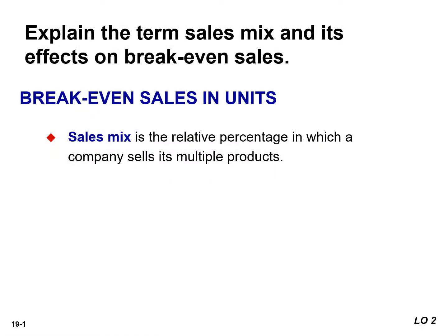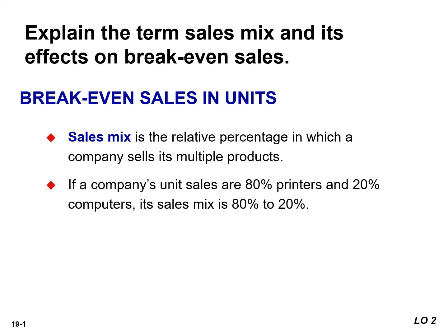Our discussion of CVP analysis has assumed that a company sells only one product. Most companies sell multiple products. When a company sells many products, it is important that management understand its sales mix. Sales mix is the relative percentage in which a company sells its multiple products. If a company's unit sales are 80% printers and 20% computers, its sales mix is 80% to 20%.